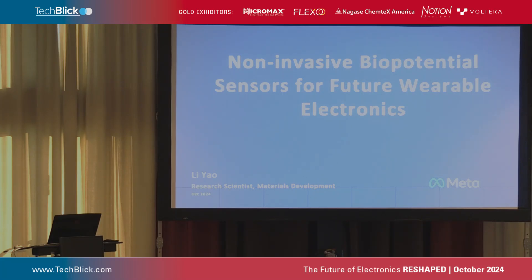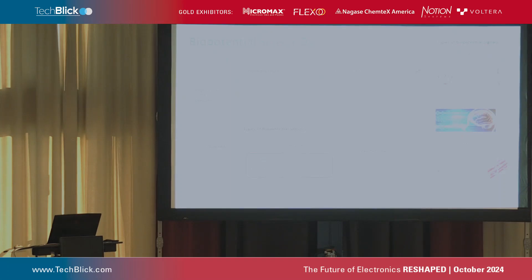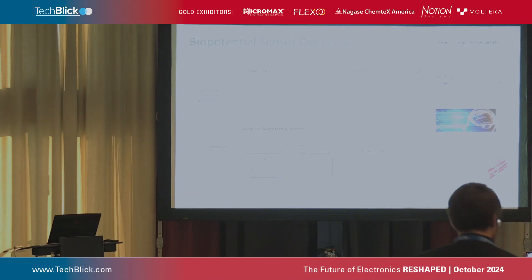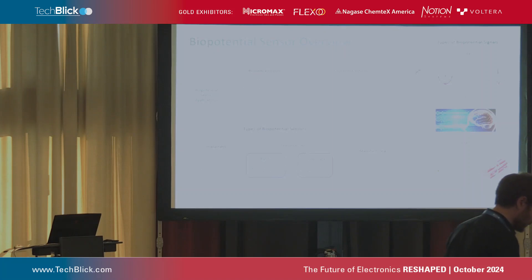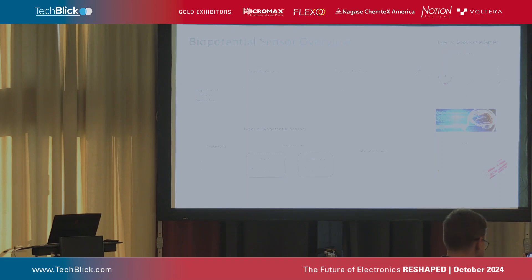Let's start the presentation by first taking a look at what a biopotential sensor is. A biopotential sensor is a transducer that can detect the ion distribution on the surface of tissue and convert the ion current into electric current.